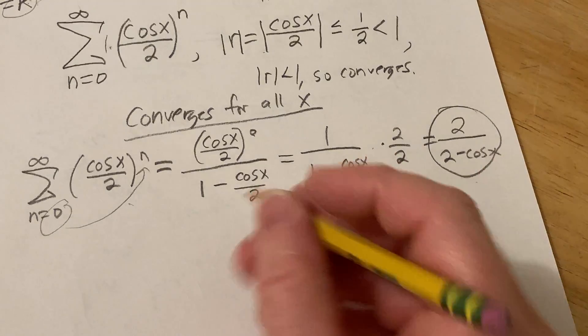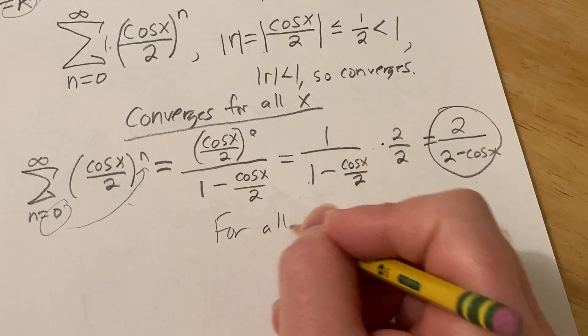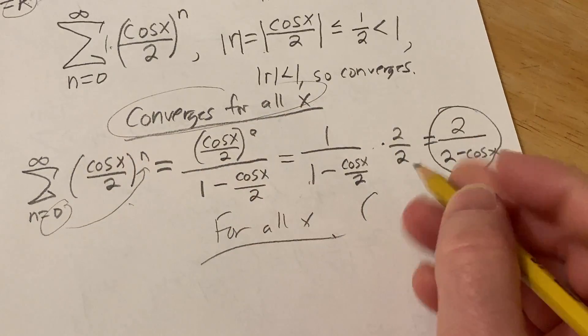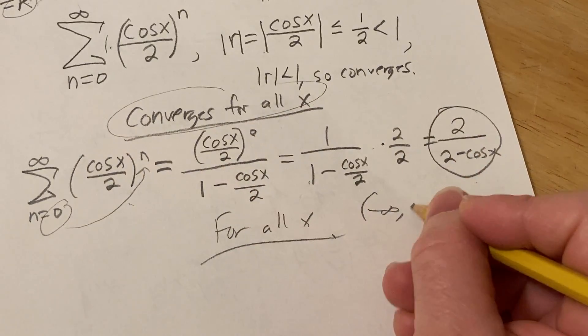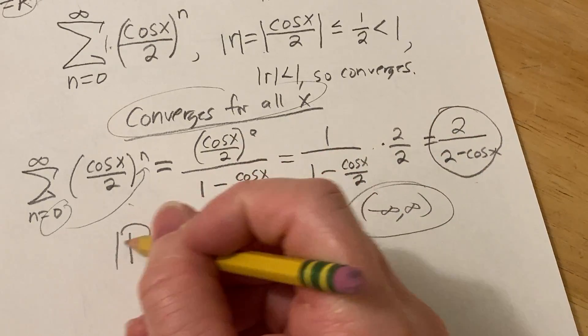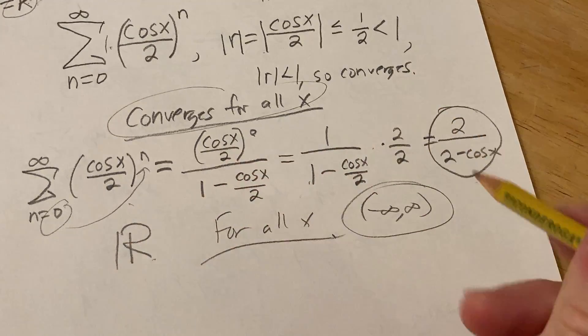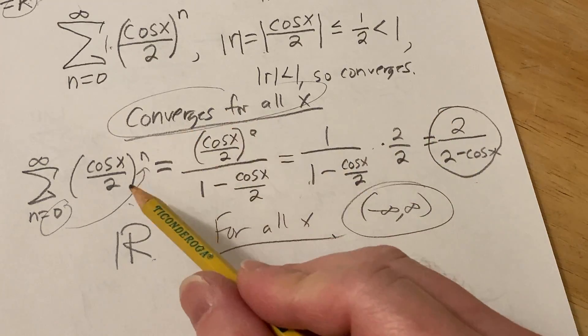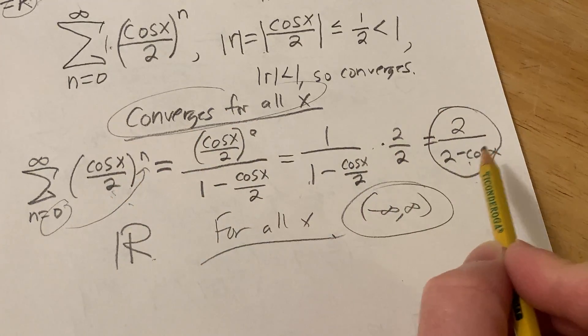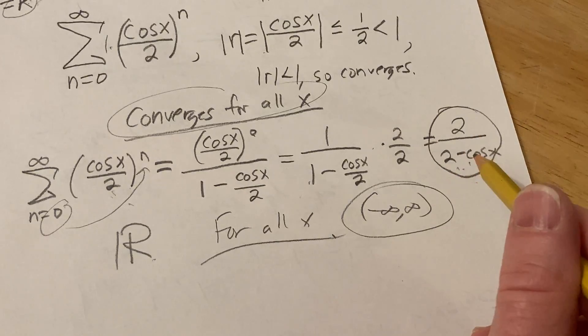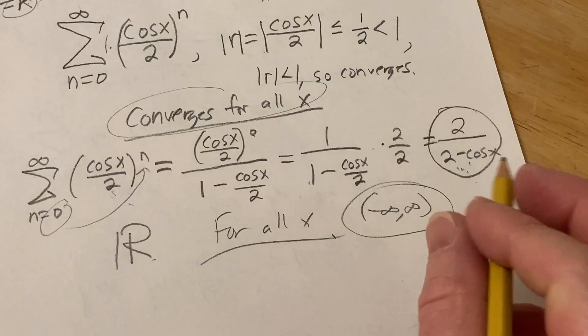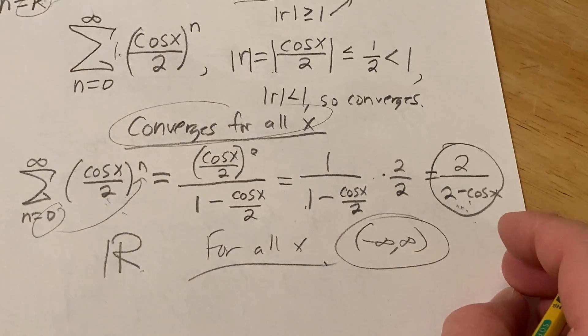So this infinite sum is equal to this for all x, right? So, yep. So the values of x would be, if you want to write it in interval notation, would be negative infinity to infinity. It's typically how you do it in calculus books. You can also write it like this, it's a set of real numbers, that would also work. So yeah, kind of interesting, this infinite series is equal to this. And it's true for all values of x. Kind of an interesting fact. I hope this video has been helpful to someone. Good luck.